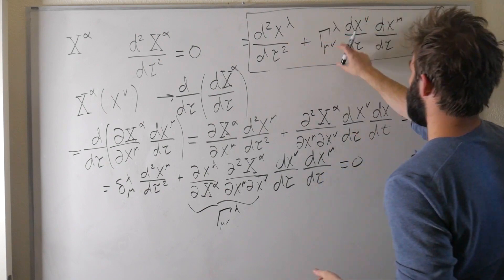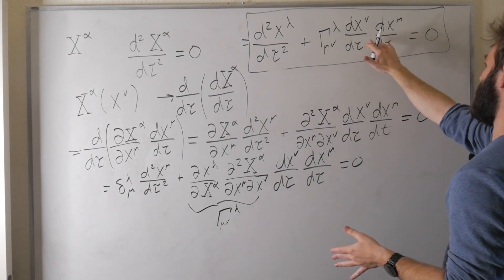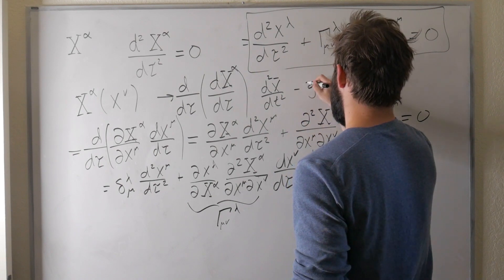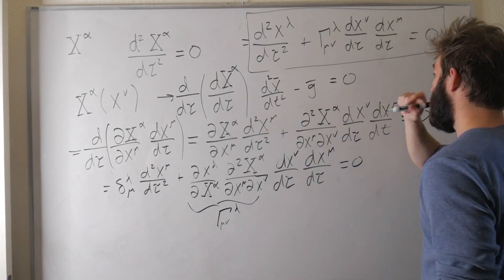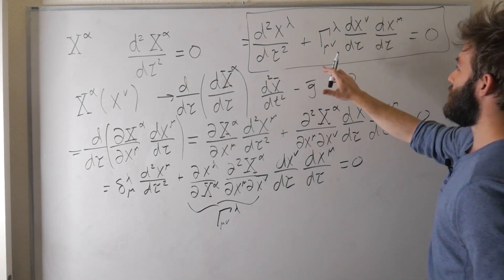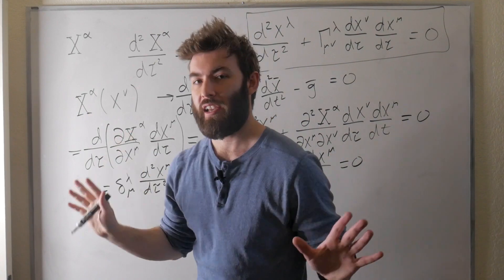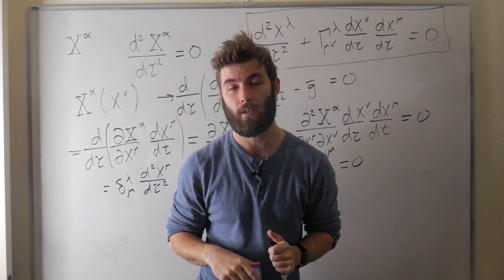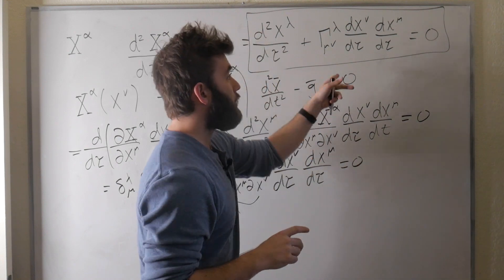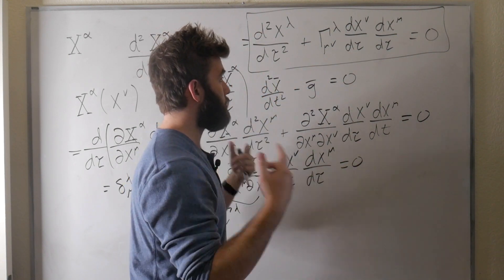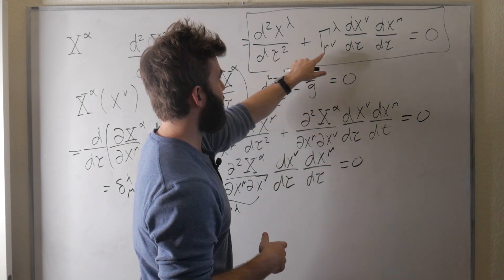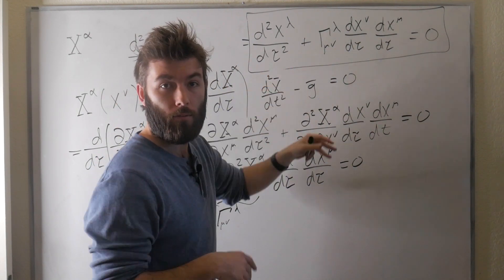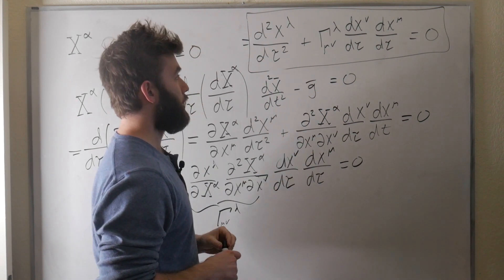We have this acceleration term with the affine connection and velocity-type factors, and we can compare this to something like free-fall: d²x over dt² minus the gravitational acceleration equals zero. These are both accelerations, which means somehow the affine connection is related to the gravitational field. In the next video we'll zero in on the affine connection and the Christoffel symbols exclusively and talk about how it transforms. There could be a future video on the Newtonian limit connecting this to Newtonian physics.